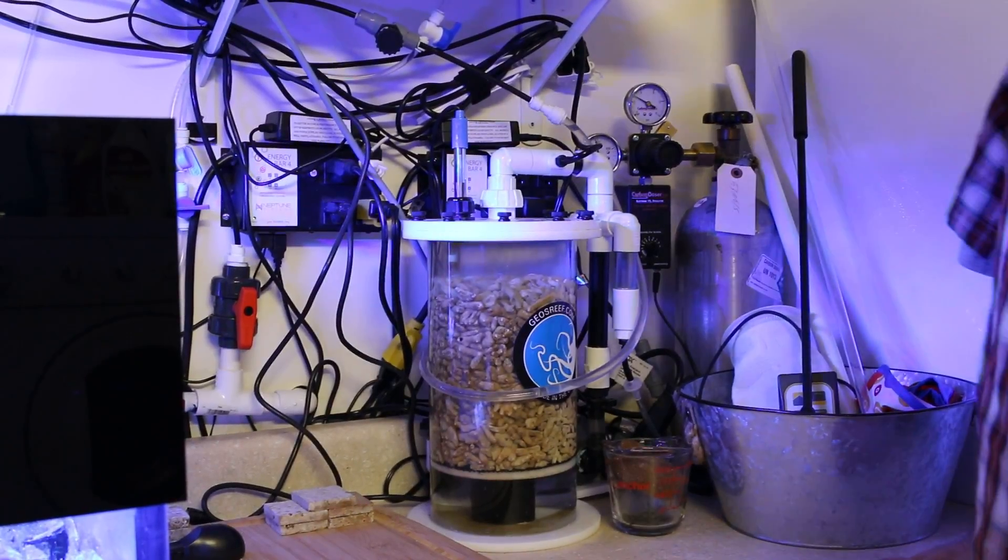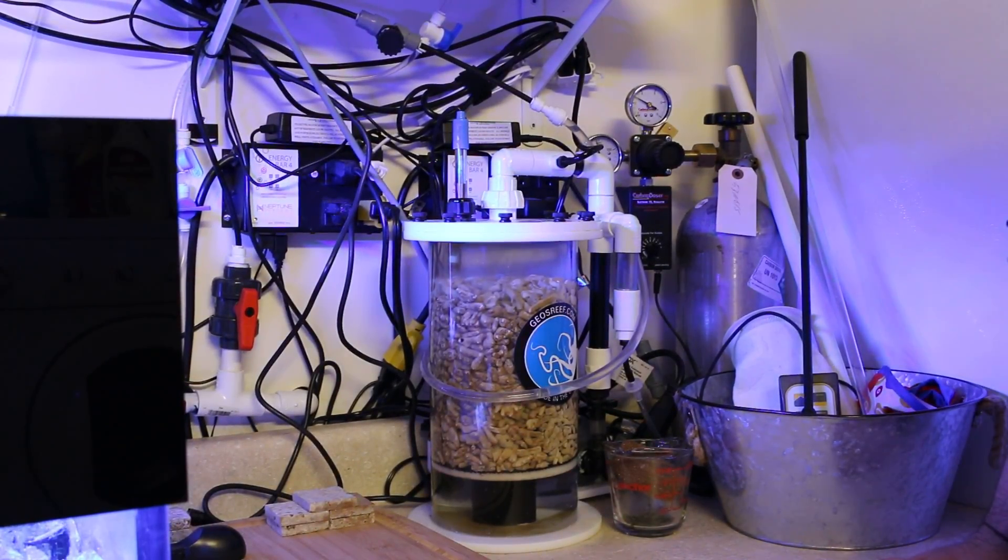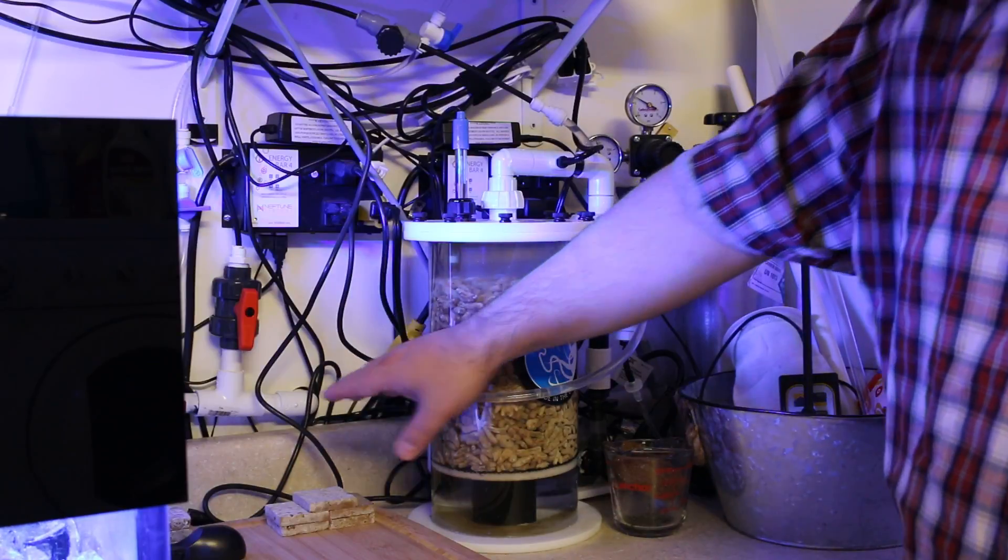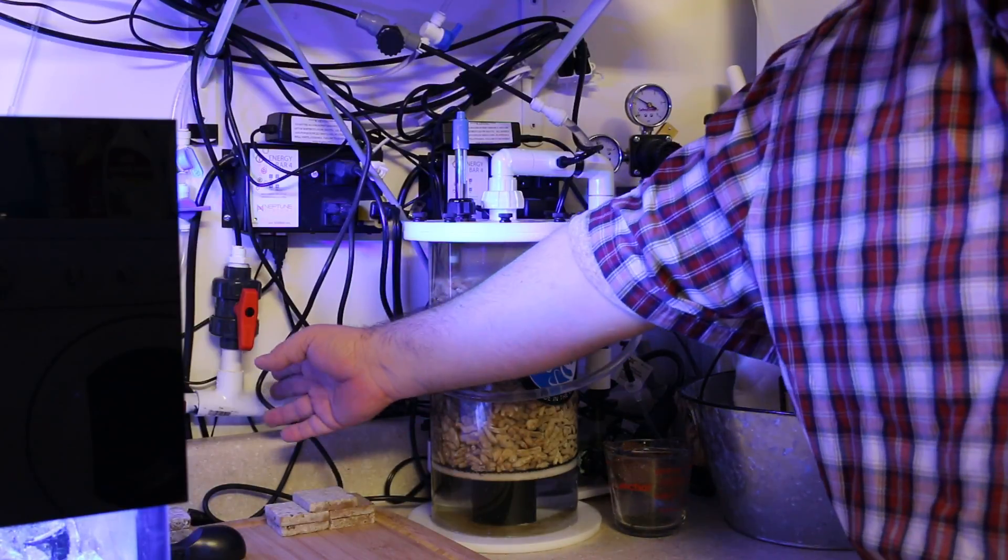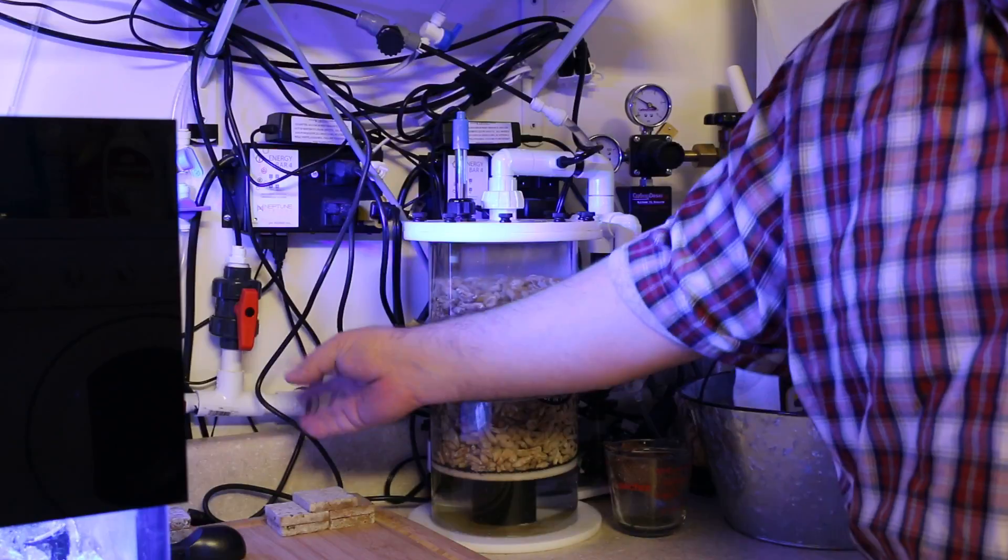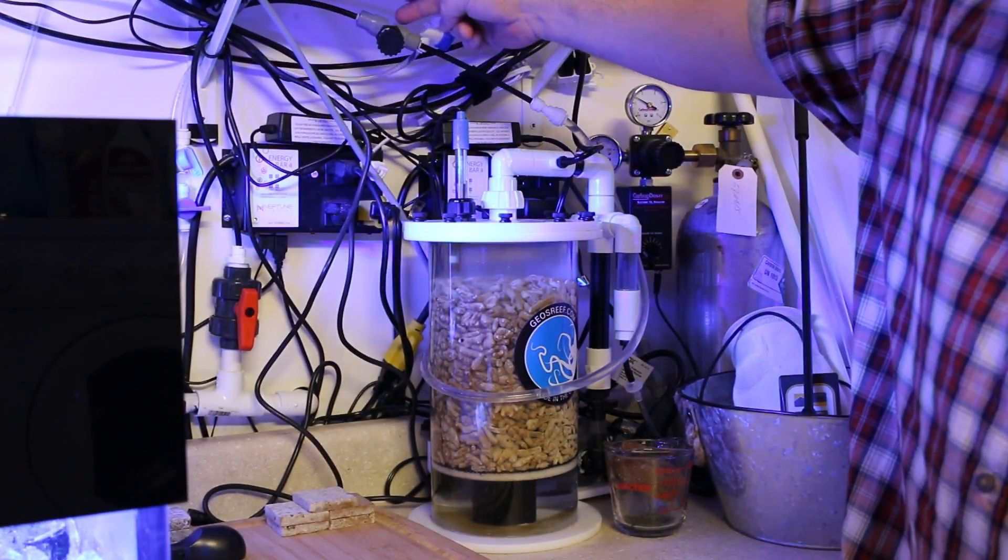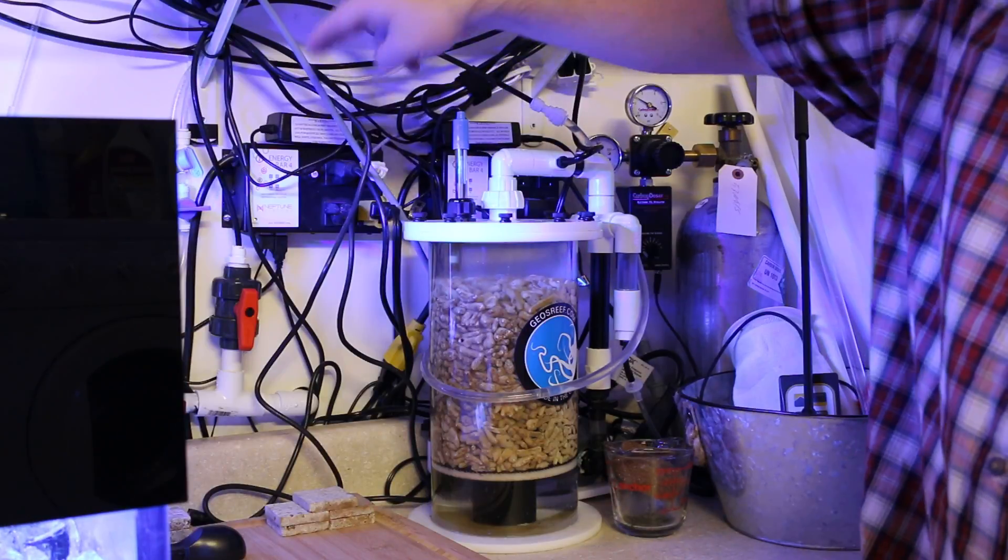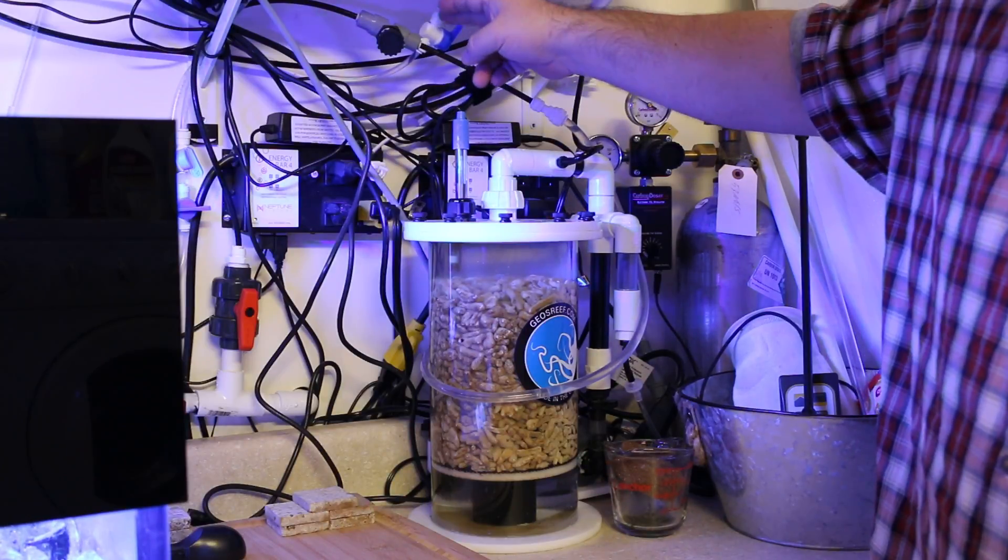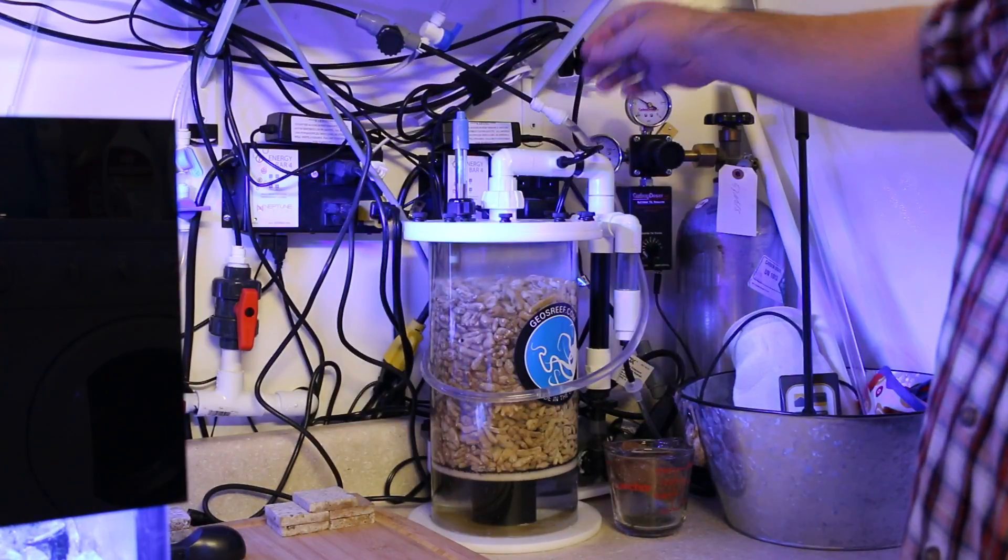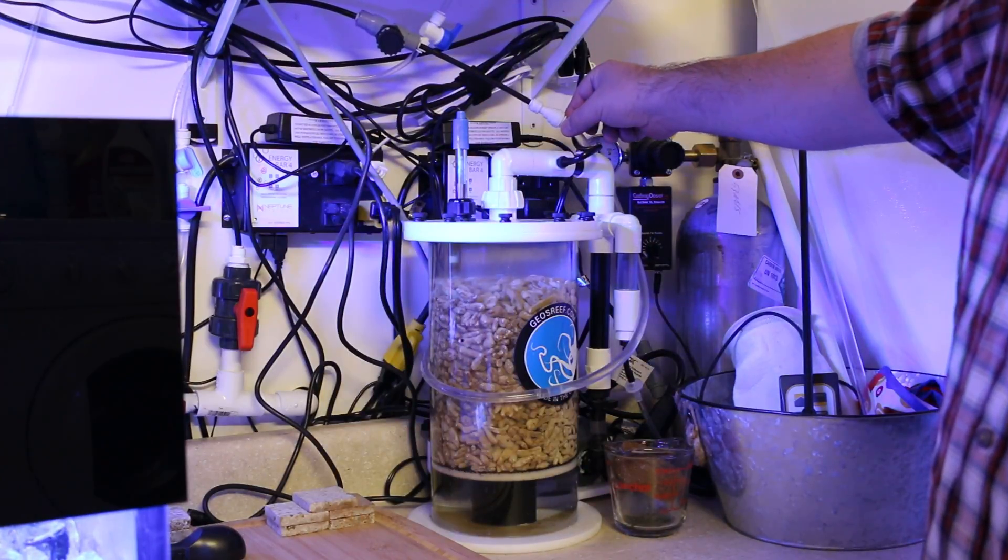So what I did was implement a manifold off the frag line. It's basically just feeding a quarter inch line to this on the incoming water, so it doesn't get clogged as easily going on the outside. It's going to the three-eighths inch outside diameter tubing which feeds the Geos Reef reactor.